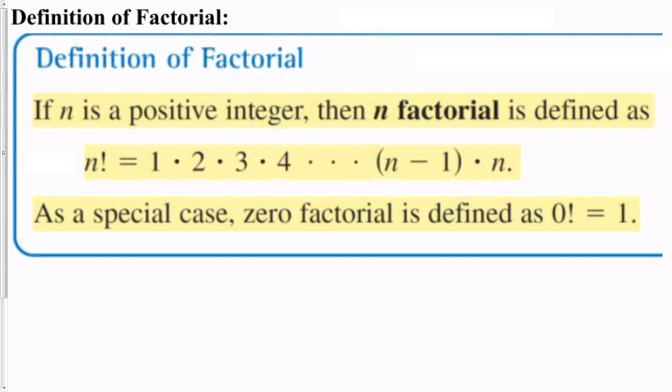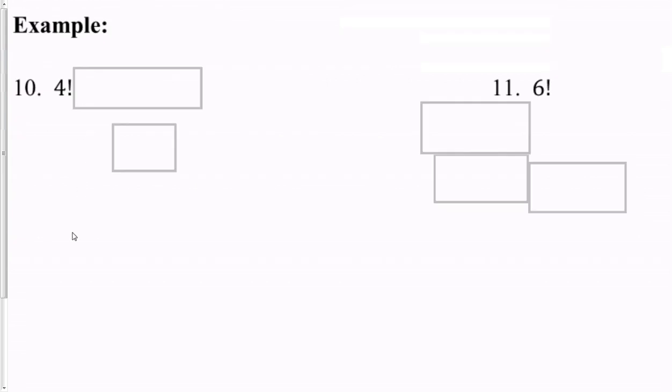For example, solve 4 factorial. Well, this is 4 times 3 times 2 times 1. So 12 times 2 gives us 24.